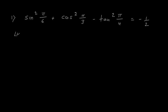We will start with the left hand side. LHS is sin square pi upon 6 plus cos square pi upon 3 minus tan square pi upon 4. In your previous standard, 10th or 9th, you learned values for sin 30 degree, sin 45 degree, sin 60 degree and so on. Now here in 11th standard, we are getting angles in radians also.